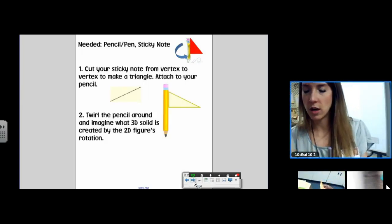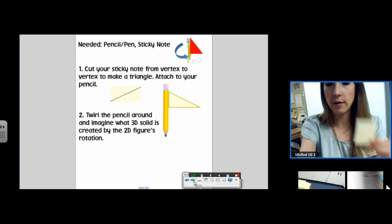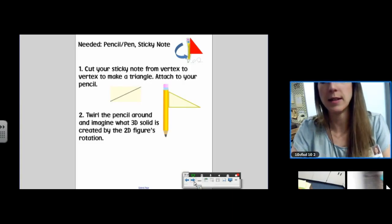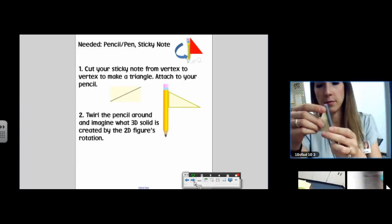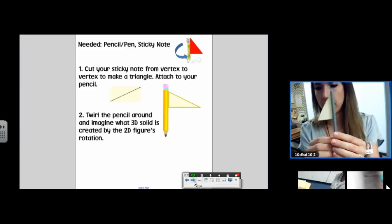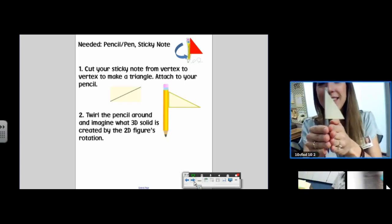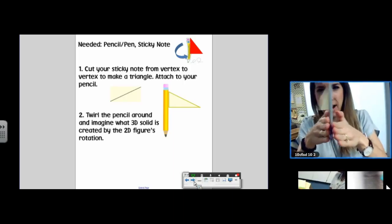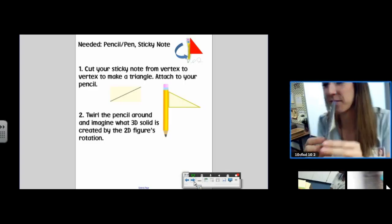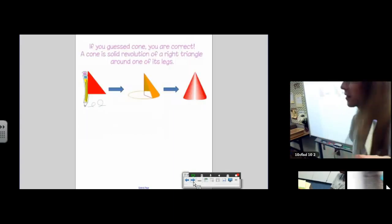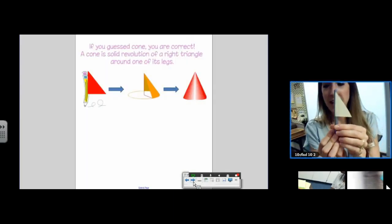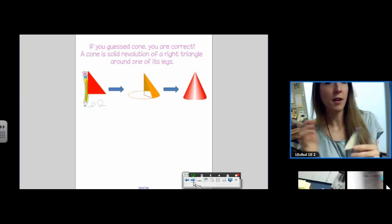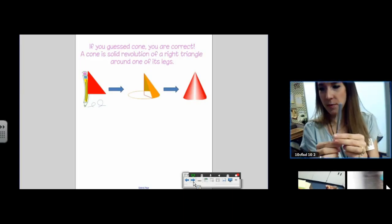Now I need you to turn your sticky note into a right triangle. Do that however you want. I'm going to just cut the hypotenuse of my rectangle. Cut through the hypotenuse. Now I have a right triangle. And now, I think it looks like what it's supposed to. Can you kind of see the 3D figure that I get when I rotate that? What am I getting? You should get a cone when you rotate that sticky note about your pencil. So a cone is a solid revolution of a right triangle around one of its legs.